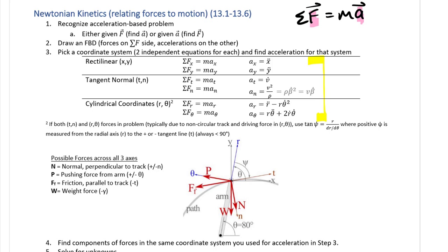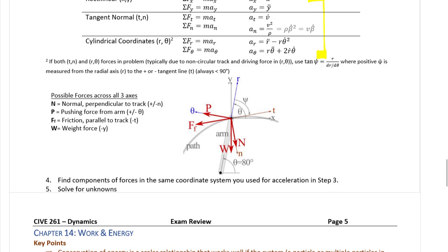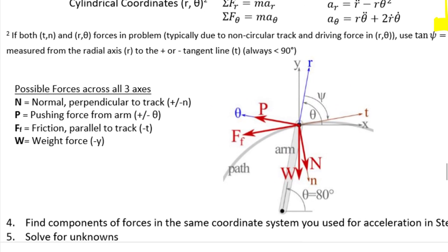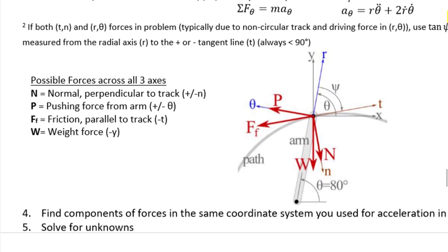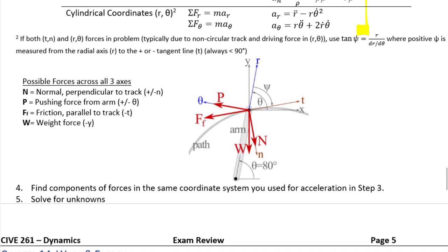In section 13.6, where we talked about r-theta motion — radial and transverse, where radial is r and transverse is theta — we introduced four different types of forces fundamental to these problems. One is the weight force, which is always in the negative y direction. Another is the normal force, which could be positive or negative along the normal axis depending on what the other forces are doing and how fast the particle is moving.